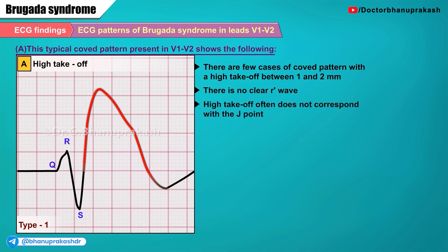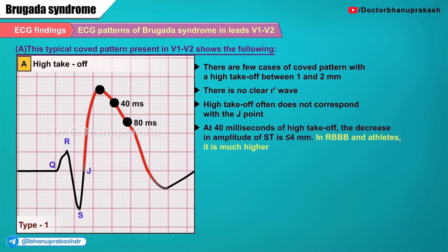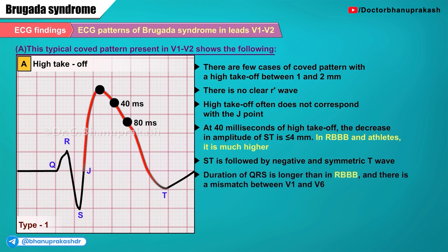The high takeoff often does not correspond with the J point. At 40 ms of high takeoff, the decrease in amplitude of ST is less than or equal to 4 mm. In right bundle branch block and athletes, it is much higher — that's how they're differentiated. The ST is followed by a negative and symmetric T wave. The duration of the QRS is longer than in right bundle branch block, and there is a mismatch between V1 and V6.